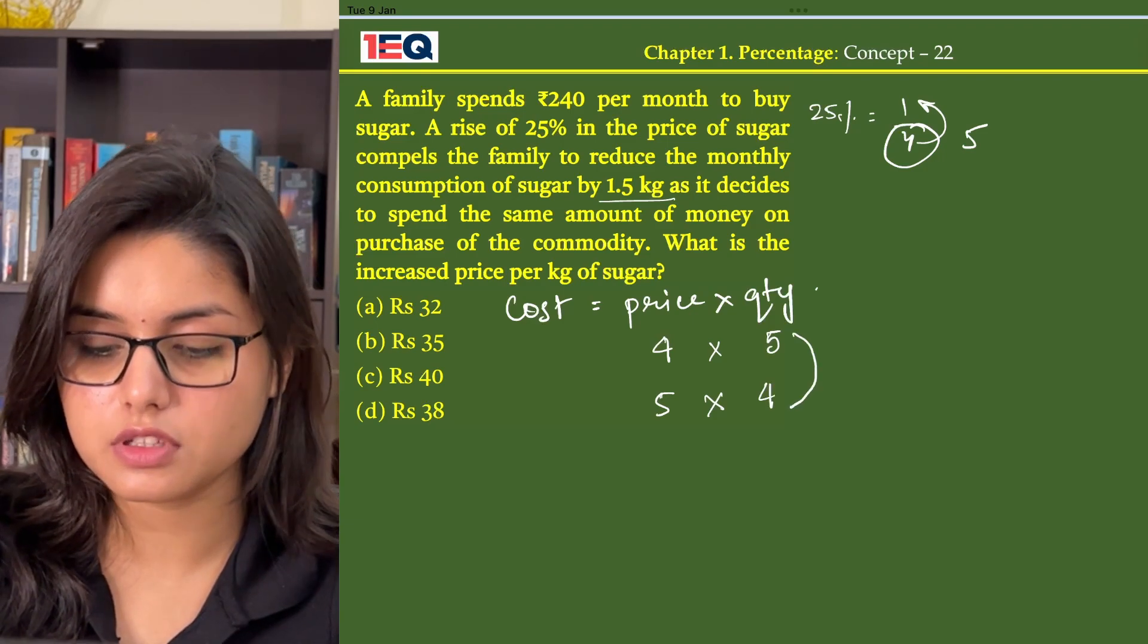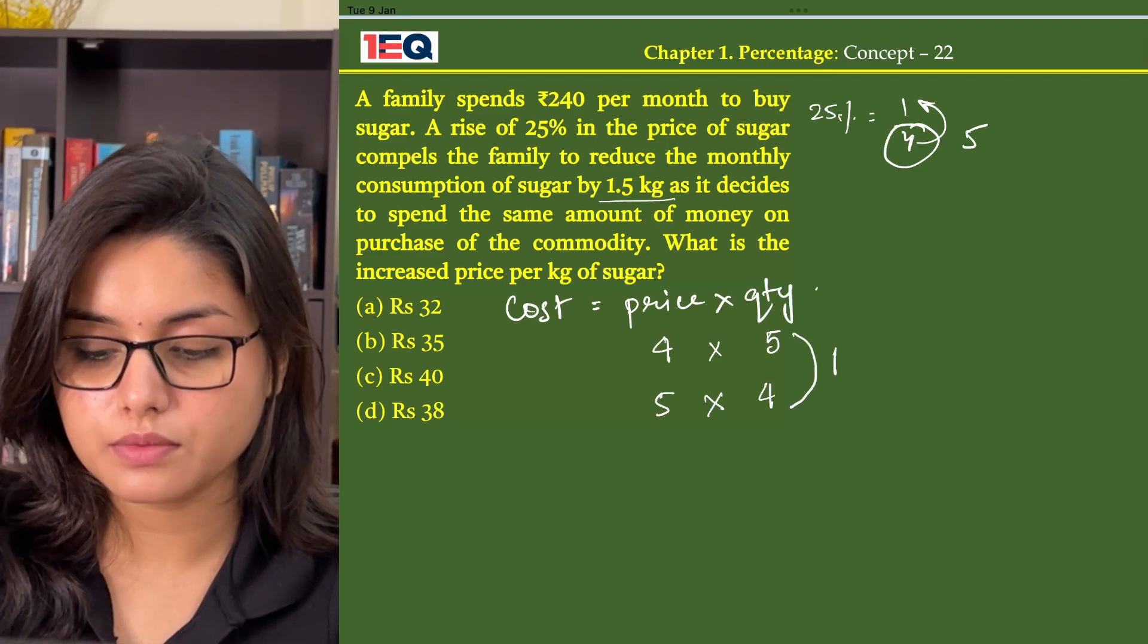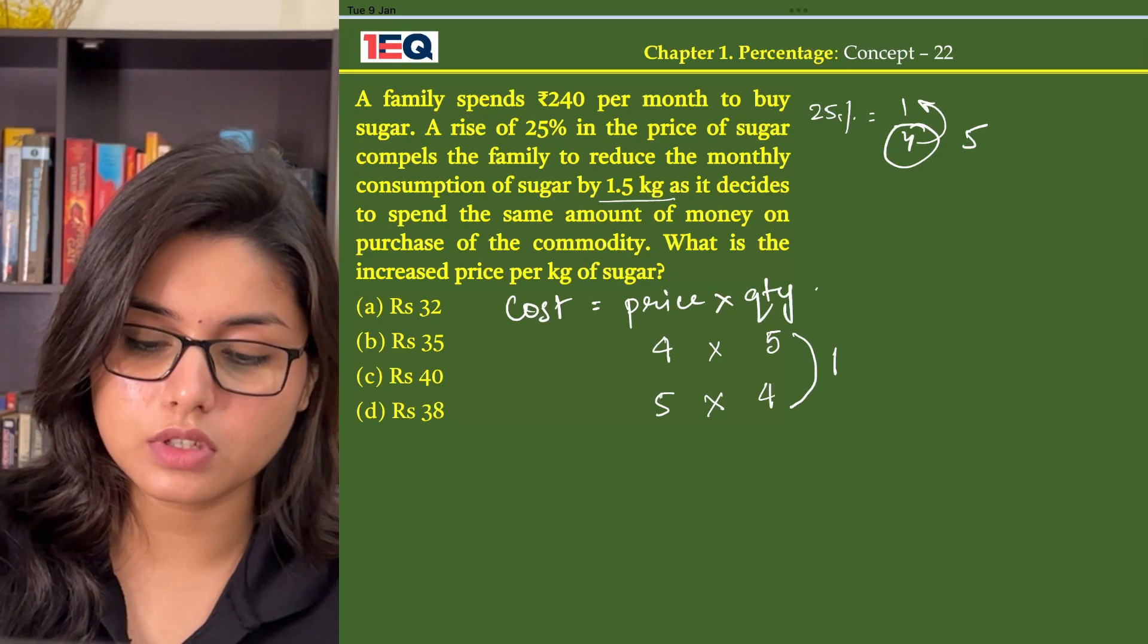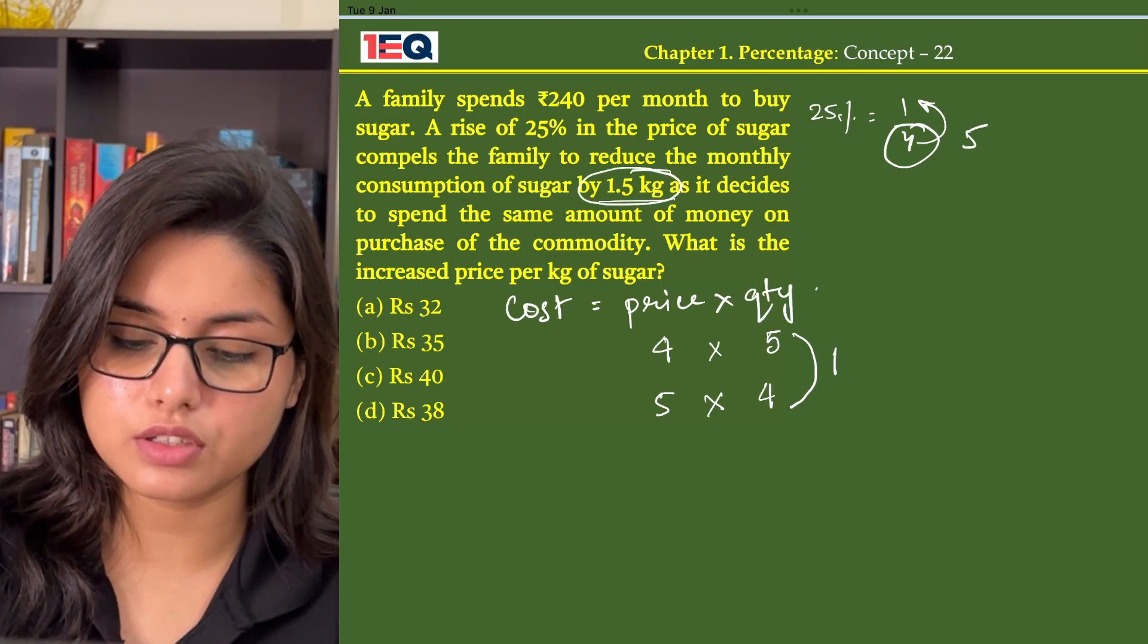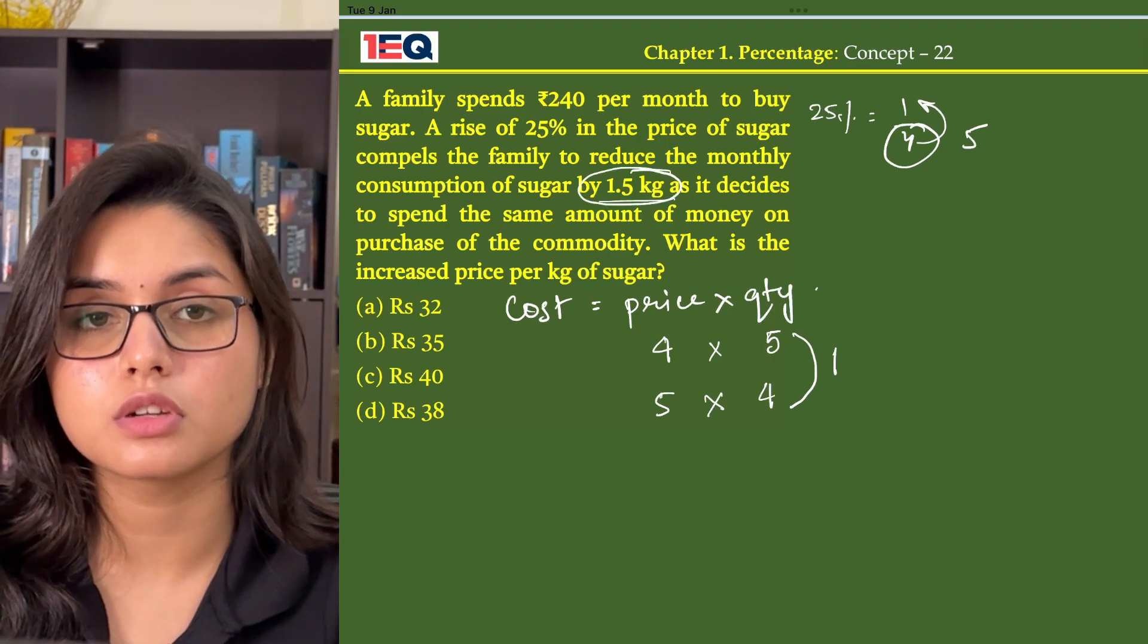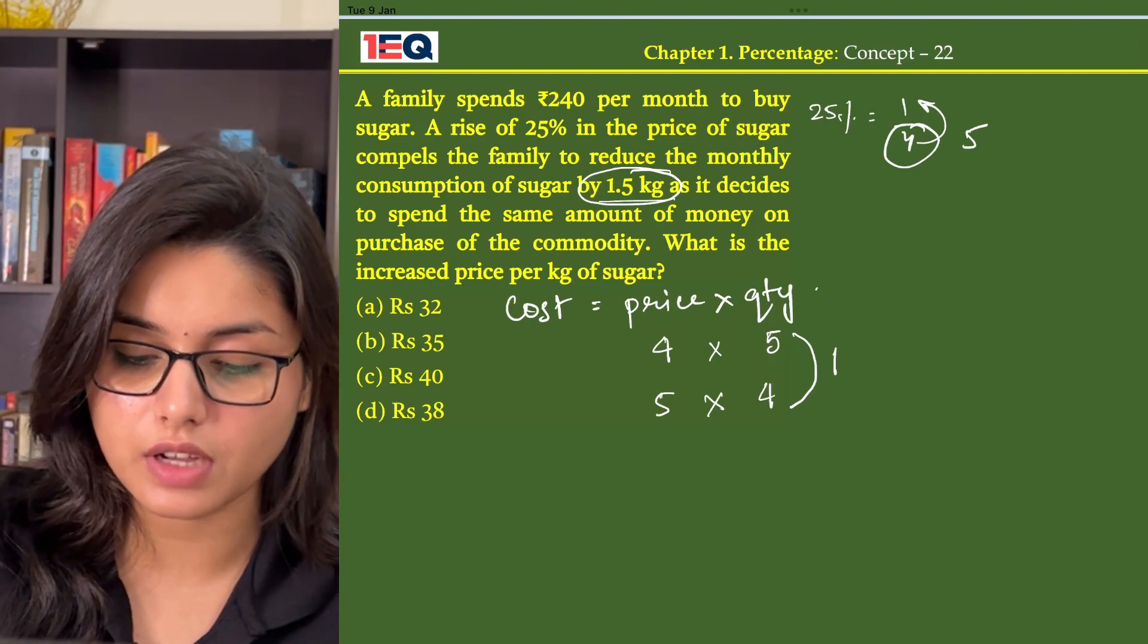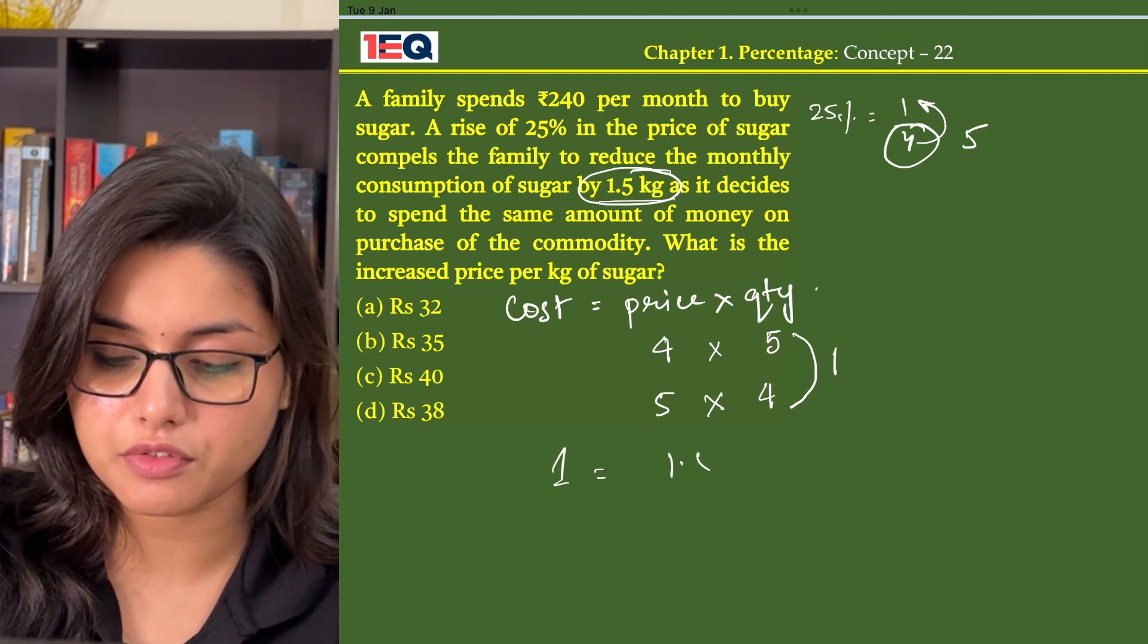Now how much is the difference between this? 1. But according to the question, the family reduced the consumption of sugar by 1.5 kg. That means the value of 1 is 1.5 kg.